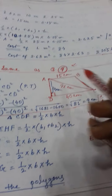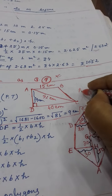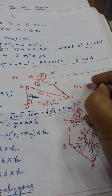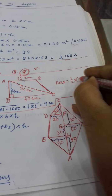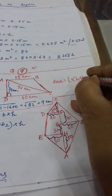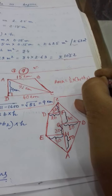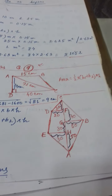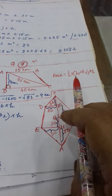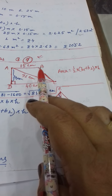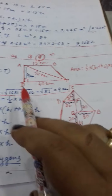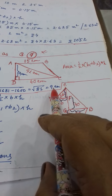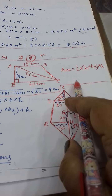Now you have to find out the area. You will find out the area using half into B1 plus B2 into H. So B1 is 15 cm, B2 is 40 cm, and height you have got is 9 cm. Place the value.